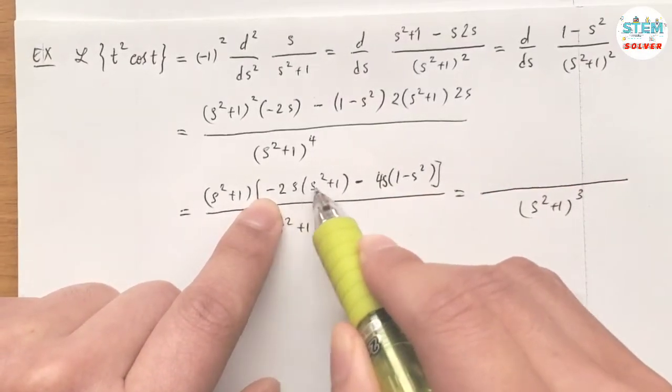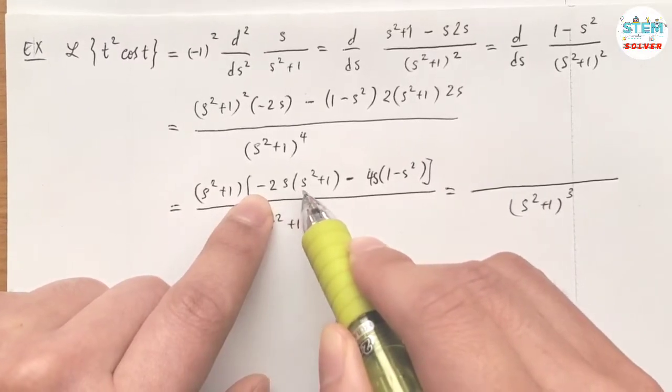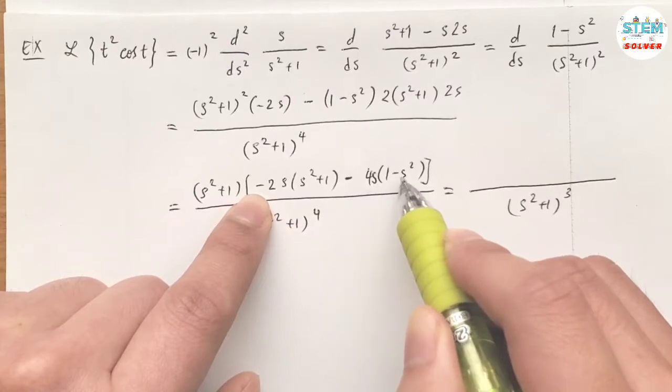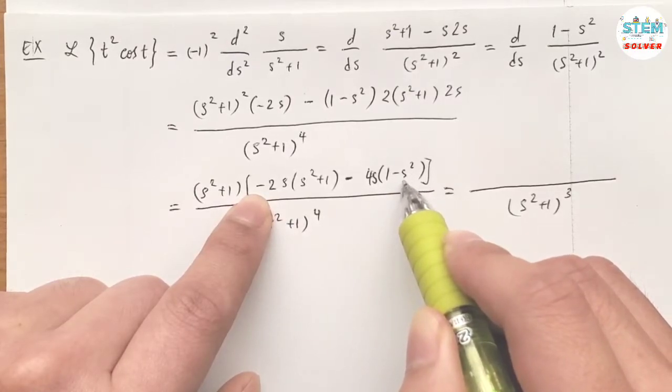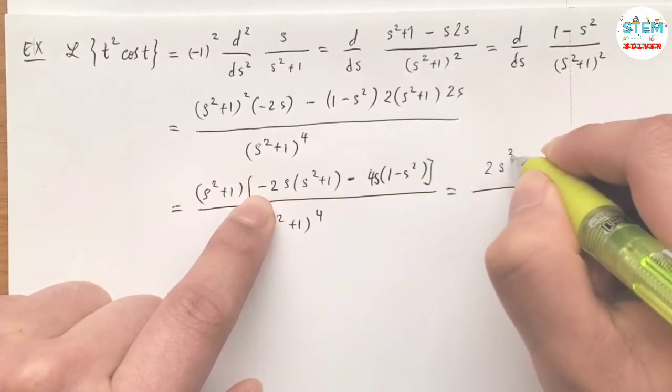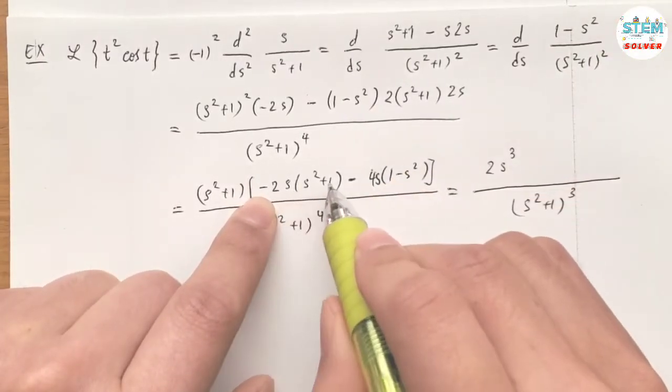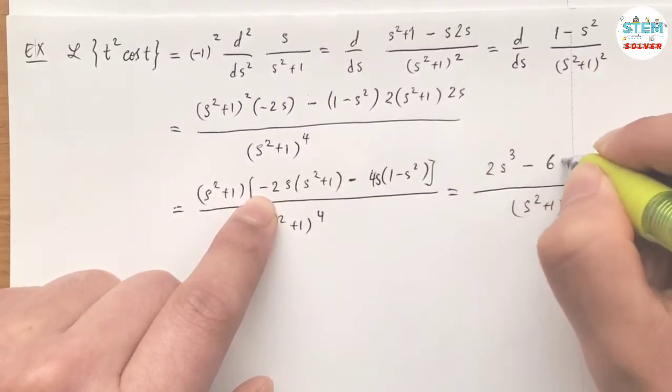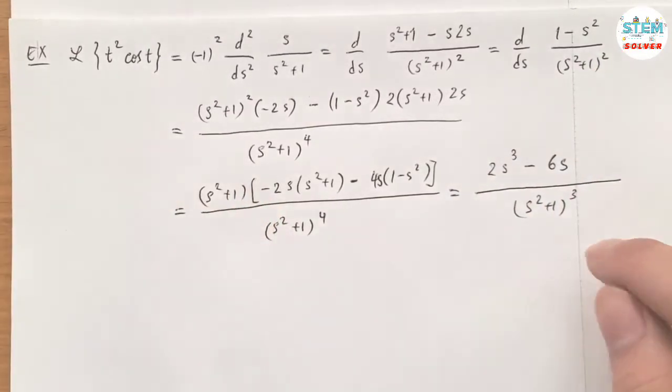We have -2s² minus 4s times (-1) which is positive 4s², minus 2s. So I have 2s², then -2s minus 4s equals -6s. This is your final solution. That's it.